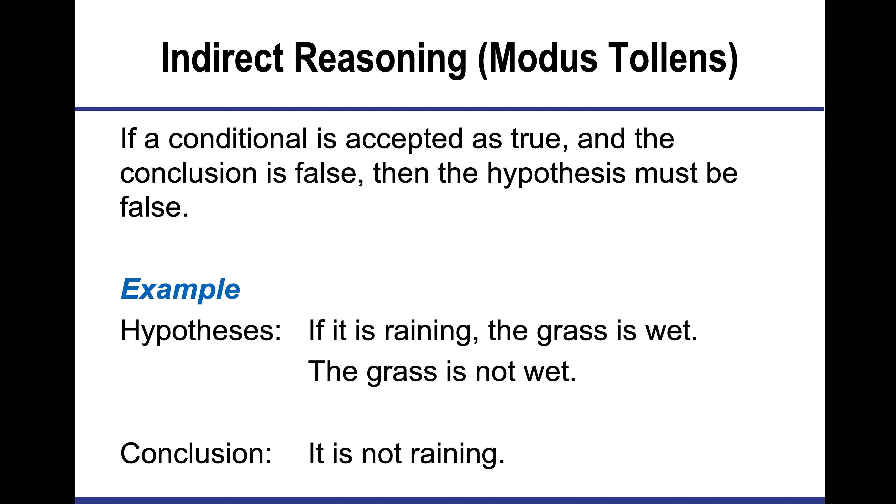If I'm using indirect reasoning, then if a conditional is accepted as true and the conclusion is false, our hypothesis must be false. If it is raining, the grass is wet. Well, the grass is not wet, which means it didn't rain. This is asking you to break down those conclusions.